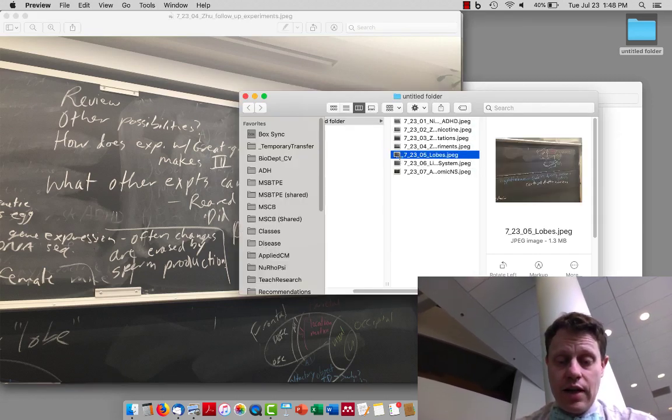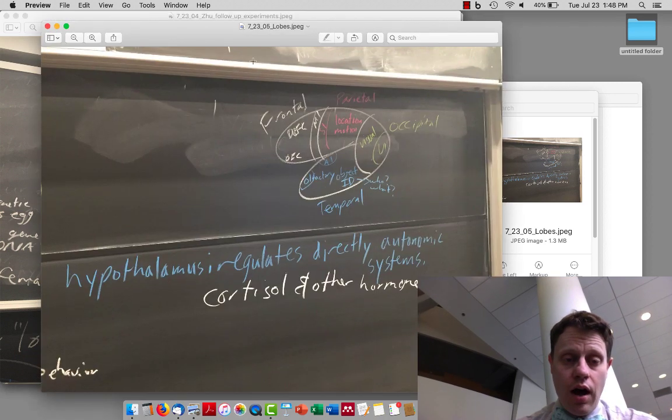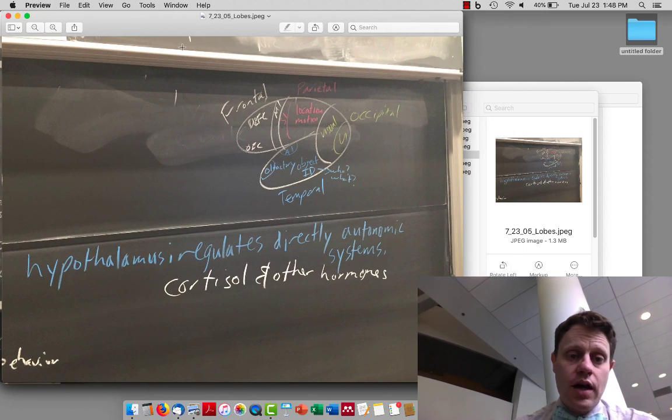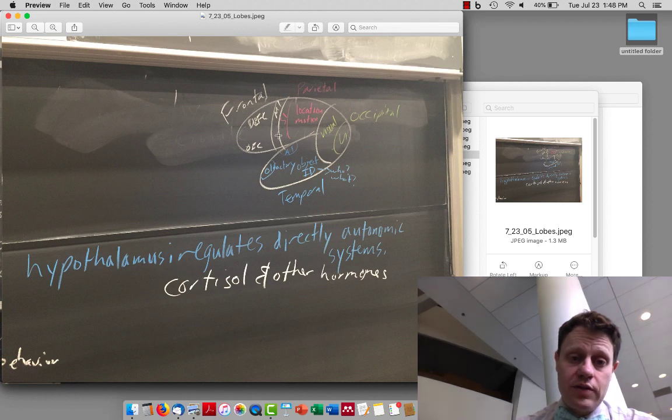Switching gears a little bit to stuff that's not going to be on the exam for tomorrow, or rather Thursday. We talked about the four lobes of the cortex: the frontal lobe and the different parts we discussed there, the parietal lobe in terms of somatosensory cortex and location motion, the occipital lobe and visual system, and then olfactory and temporal lobe.